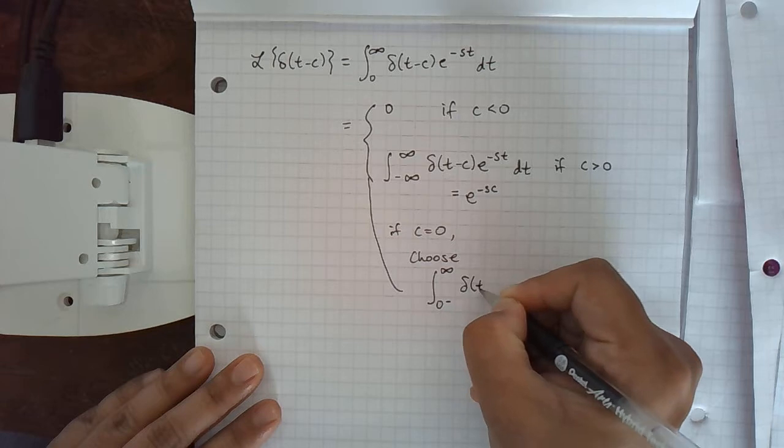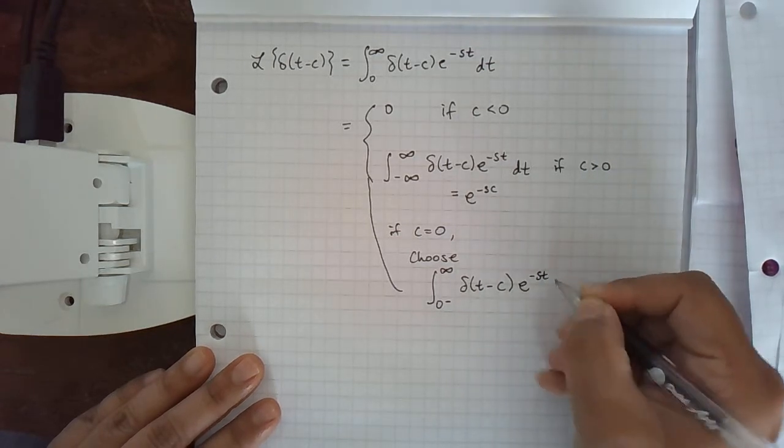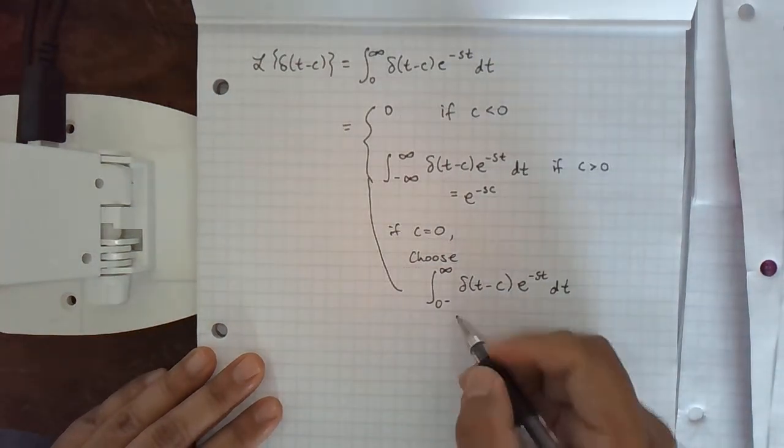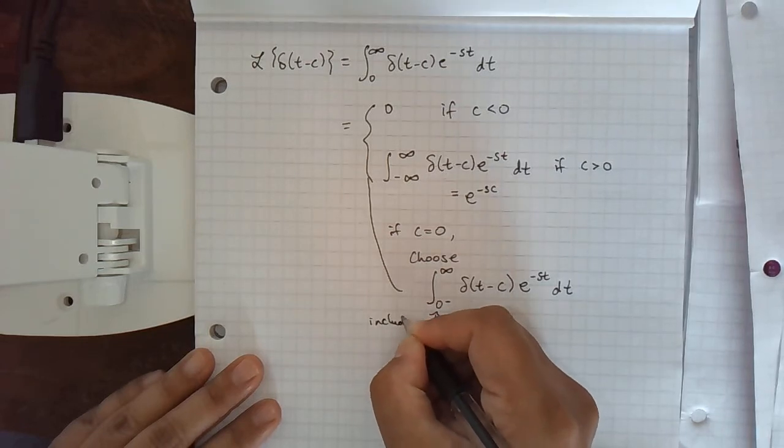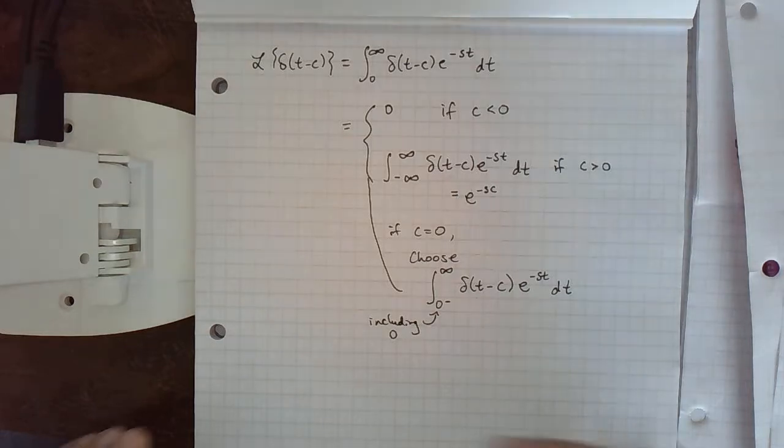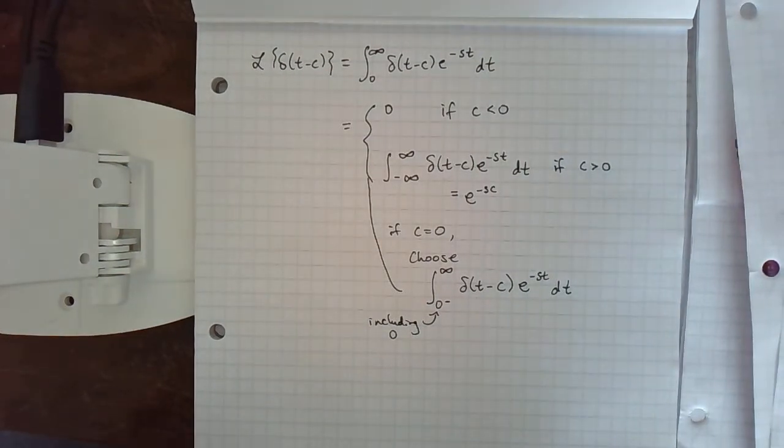We're going to choose this to make our definition of the Laplace transform more useful. So this is now including all of zero, if that makes any sense. With integrals, where the interval starts and ends really matters.